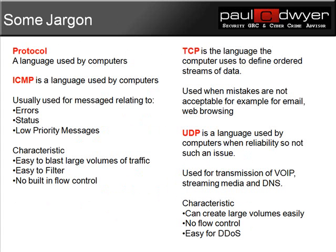Now let's revise some basic jargon. First of all, the word protocol — you can think of protocol as a language used by computers. Next, ICMP. ICMP is a type of language used by computers in order to communicate, usually around messages relating to errors, status, or low priority messages.